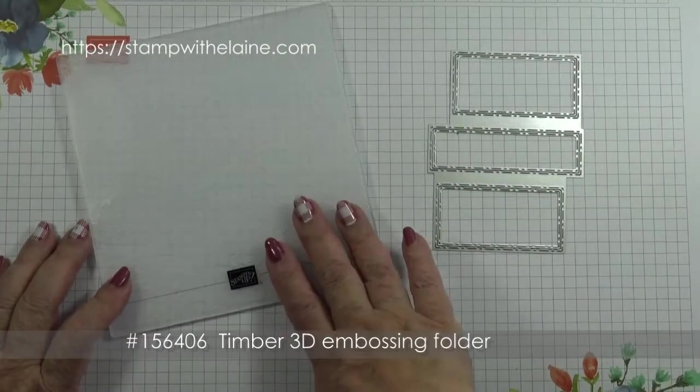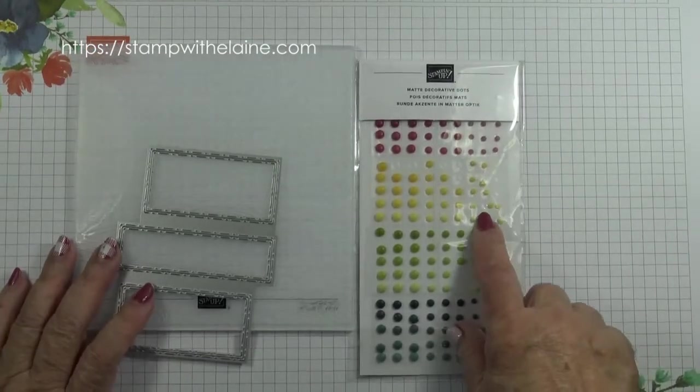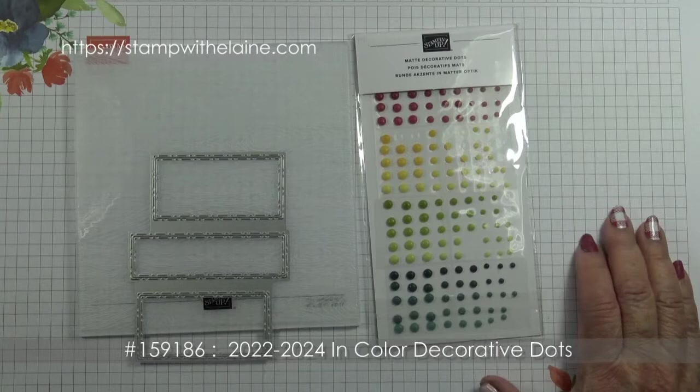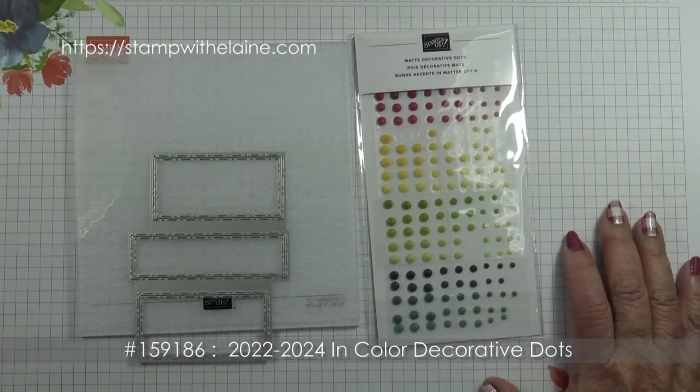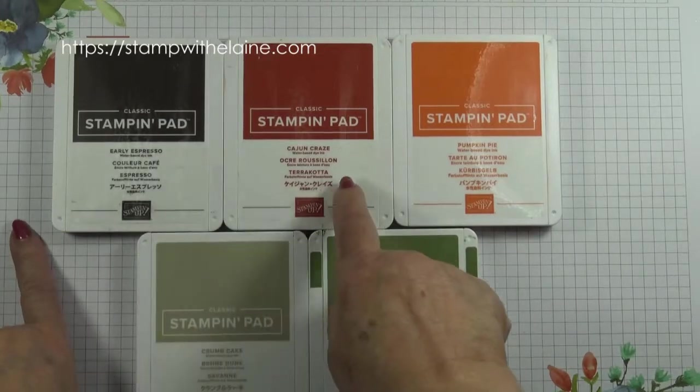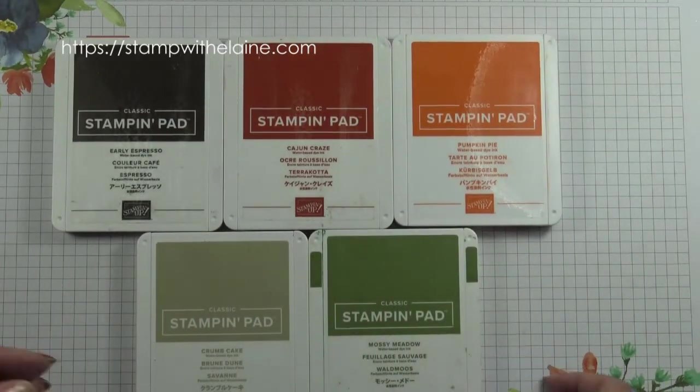I'm also using the Timber 3D embossing folder, these matte decorative dots in all the in colours for 2022 to 2024. The inks I'm using are Early Espresso, Cajun Craze, Pumpkin Pie, Crumb Cake and Mossy Meadow.